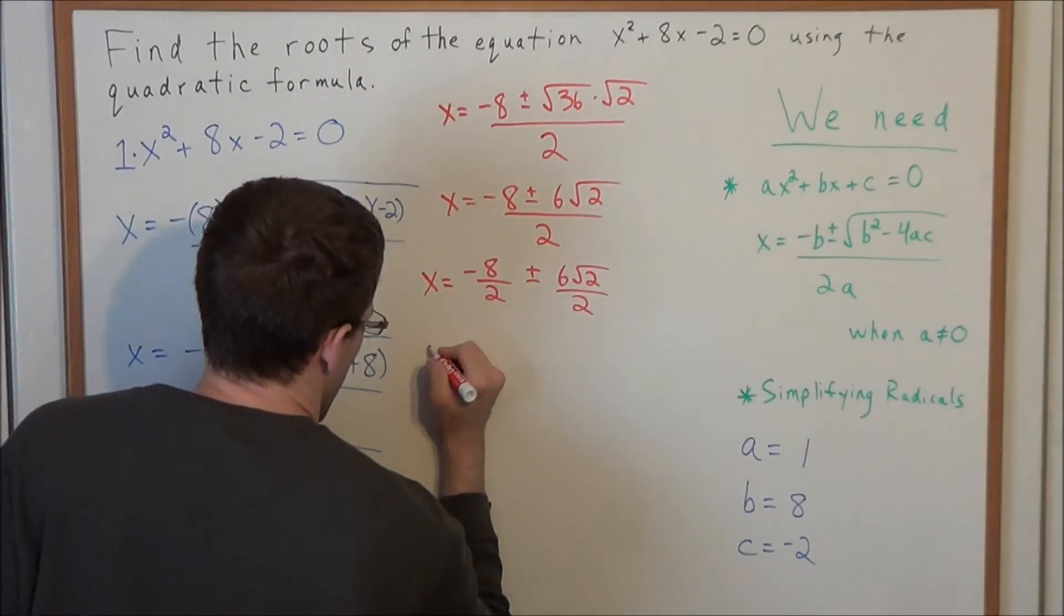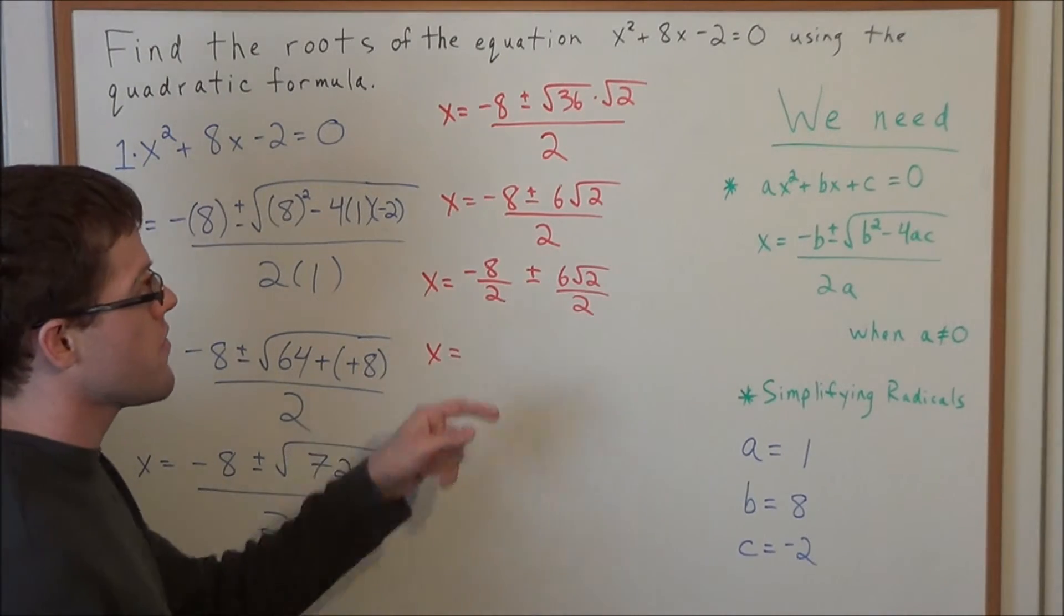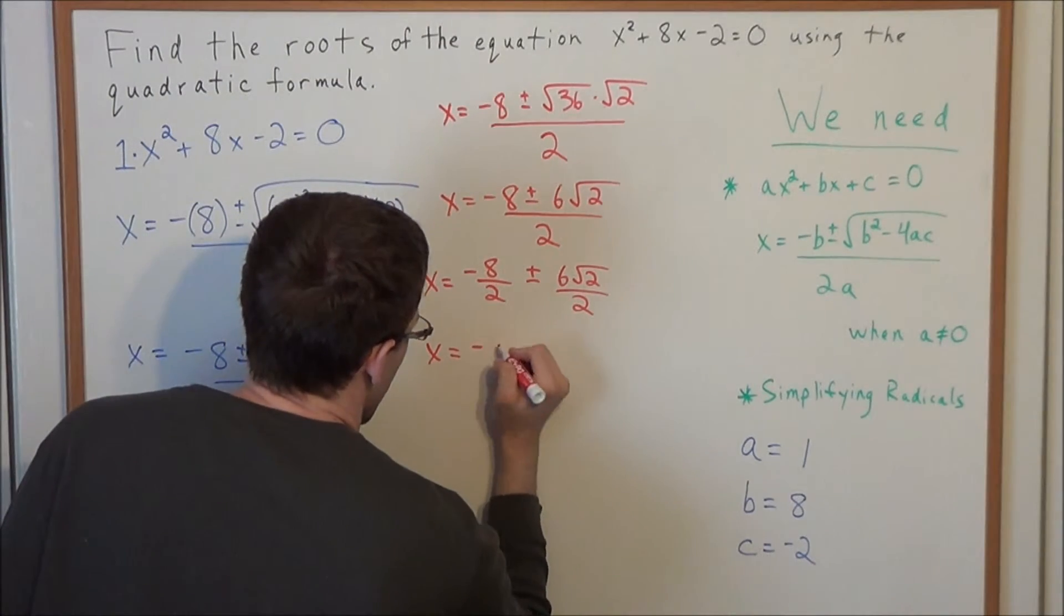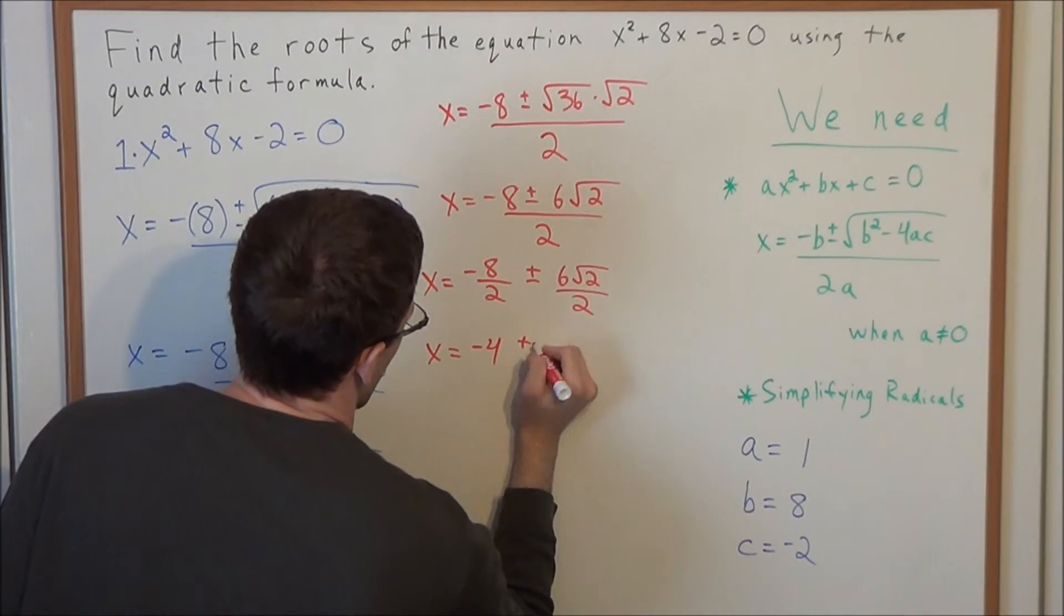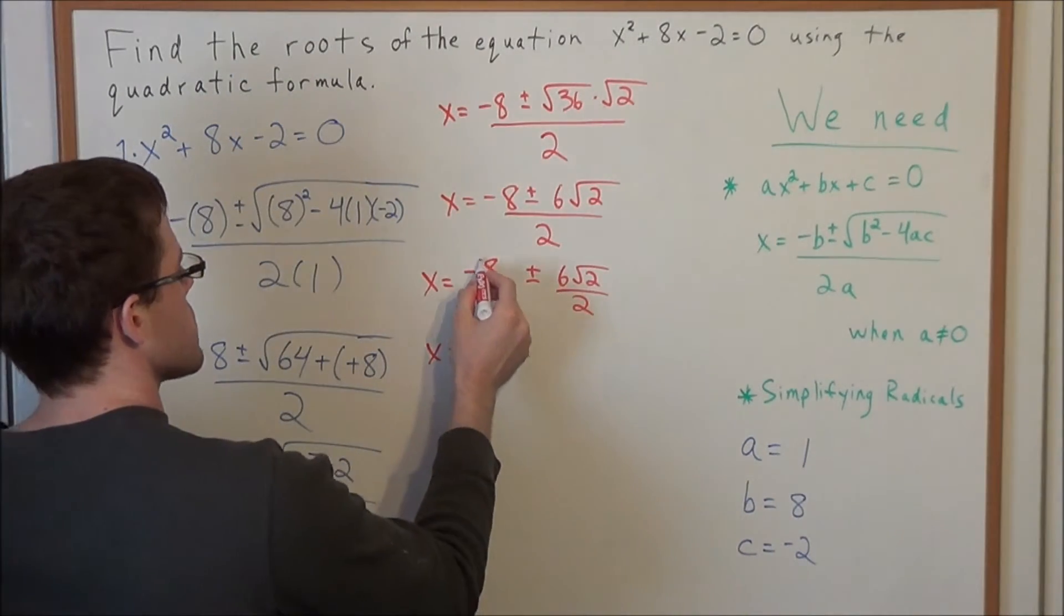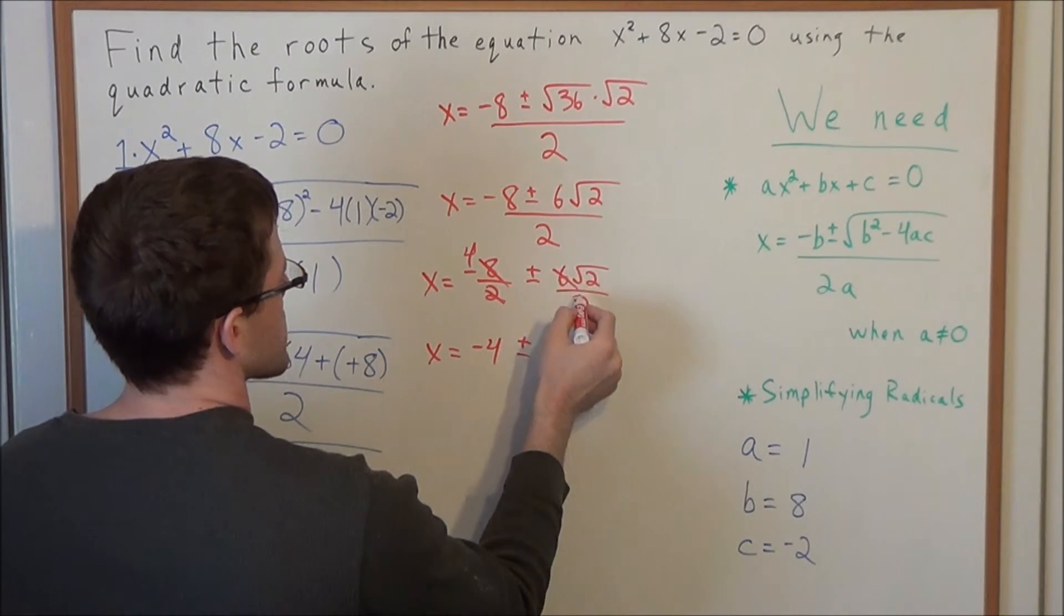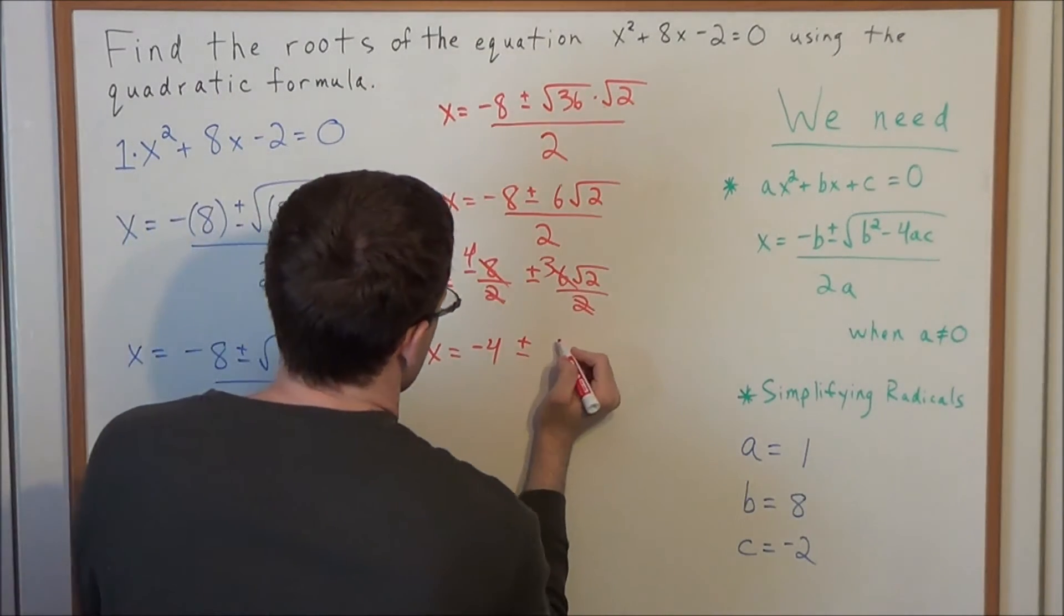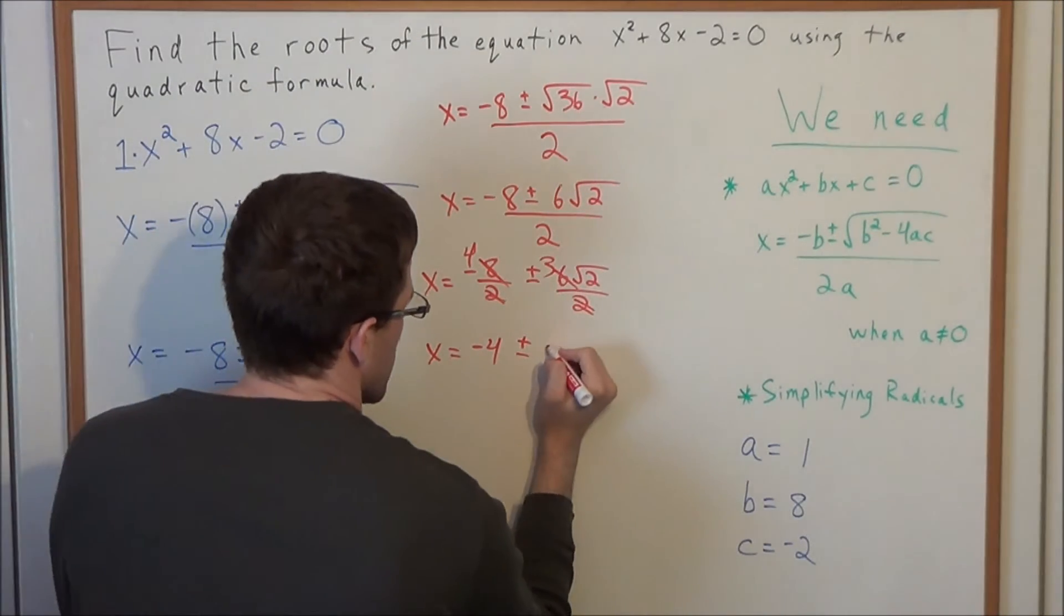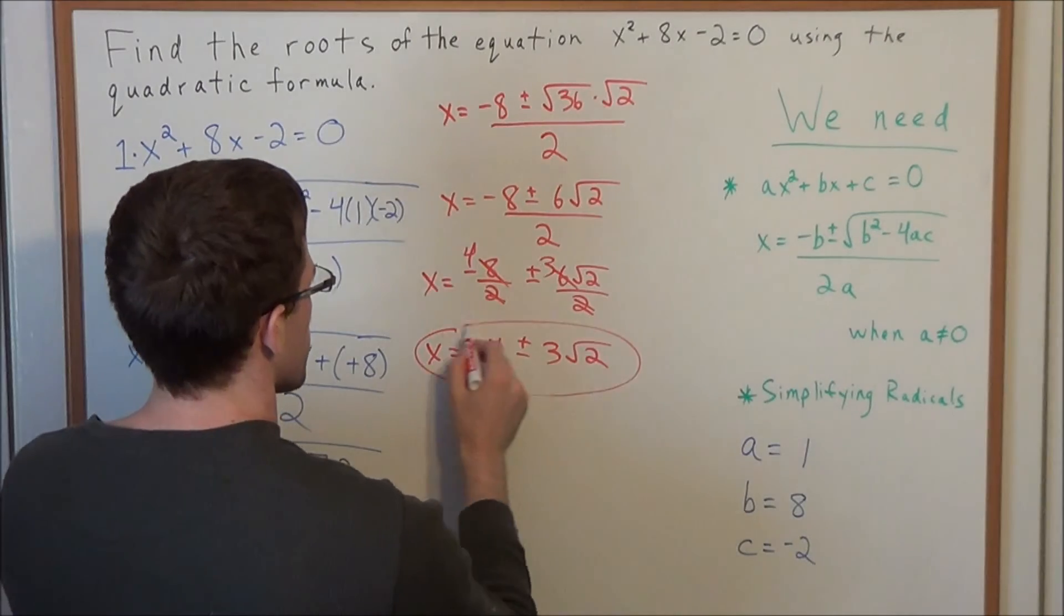And now we have x = -8/2 is -4. So -4 ± (and now how is this going to simplify? Well, 6/2 is 3), so we have -4 ± 3√2. So this is one acceptable form of the answer.